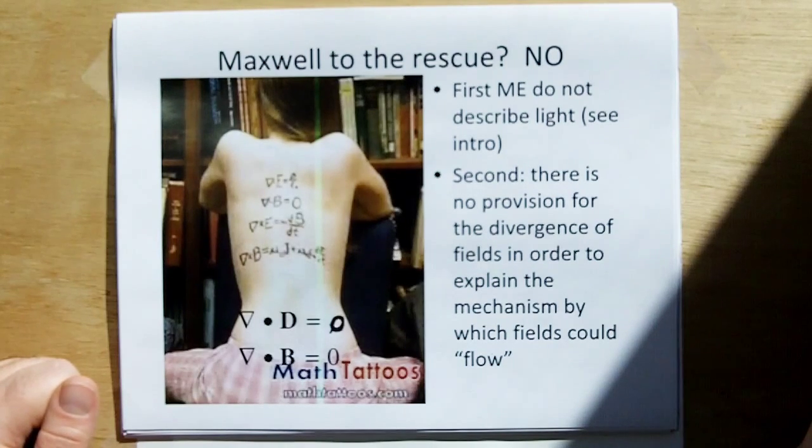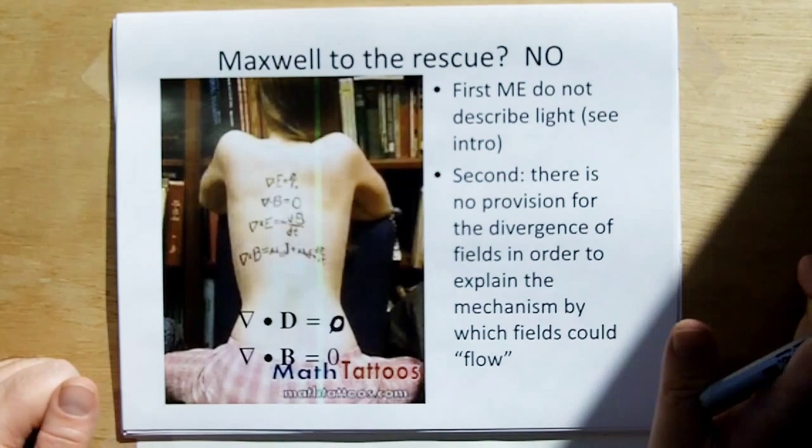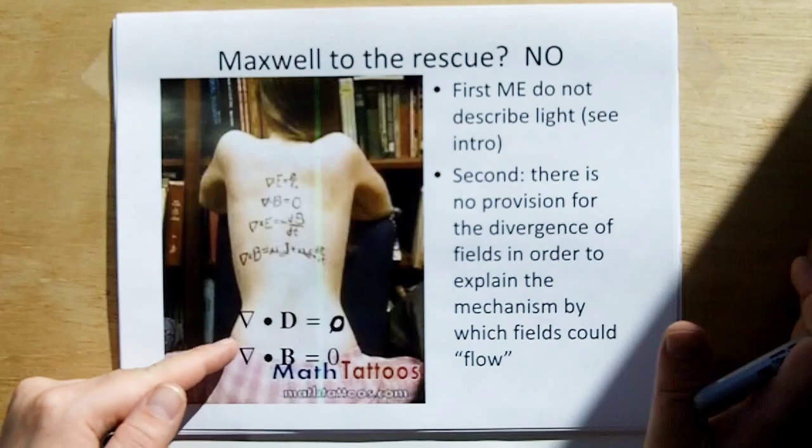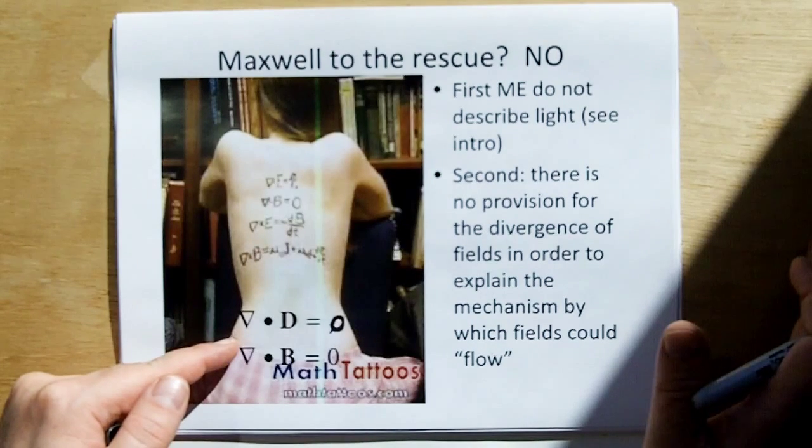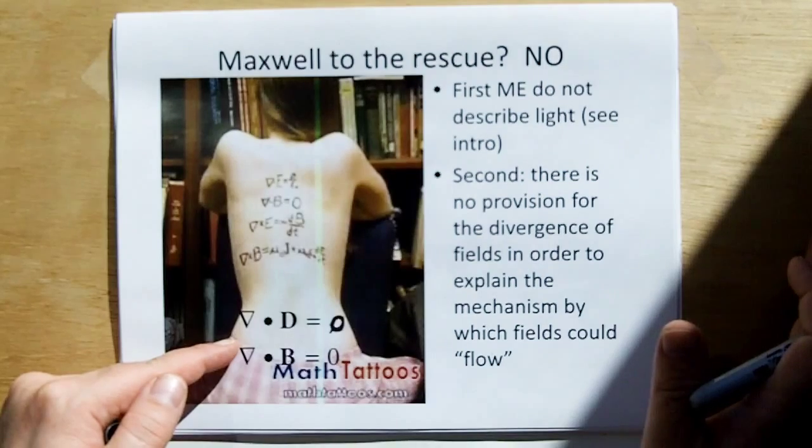And anybody out there that says, well, they've got a model that doesn't know, you're applying, you're doing what we did before, you're applying models cleverly to mimic the phenomenon. Because the equations that are trying to explain how light works do not account for divergence, and therefore cannot account for diffraction.